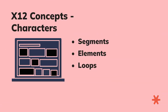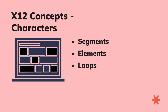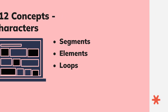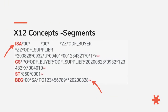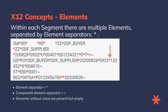There are three important components that make up an X12 document: segments, elements, and loops. Each line of an X12 document is a segment, which starts with the segment ID and ends with a segment terminator, either a tilde or a new line character. Segments are like labeled boxes that hold specific pieces of information. Each segment has a name and contains details about a particular aspect of a business transaction, like a party's name or an item's price. Within each segment, there are multiple elements separated by element separators, which are usually the asterisk character.